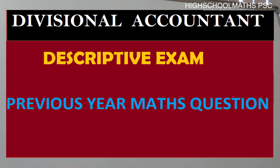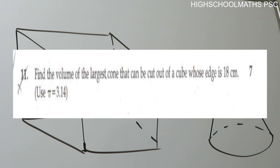We are going to work on the Preliminary Exams Descriptive Exam problem. The link is in the description box. Find the volume of the largest cone that can be cut out of a cube whose edge is 18 cm. Pi is equal to 3.14.